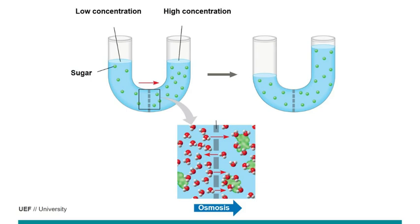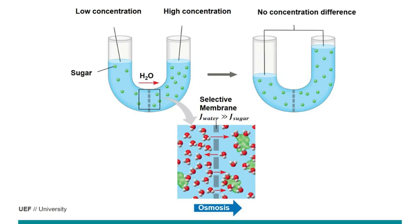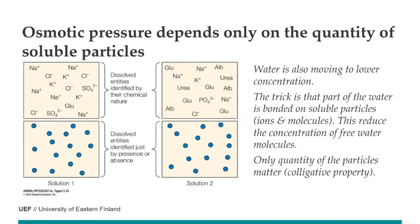Osmosis works through a semi-permeable membrane: with a high-concentration solution on one side and low on the other, water moves until there is no concentration difference. The osmotic pressure depends only on the quantity of particles, not their type — it moves toward lower water concentration. Part of the water is always bound to soluble particles (ions and molecules), reducing the concentration of free water, so water moves to where there is more of anything except water. It is a colligative property — it does not matter whether you have sodium, potassium, glucose, or whatever.